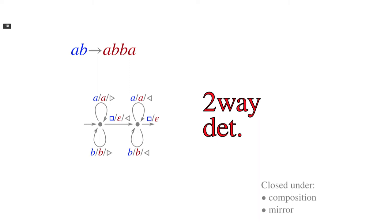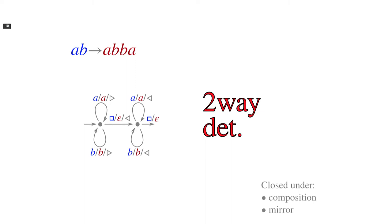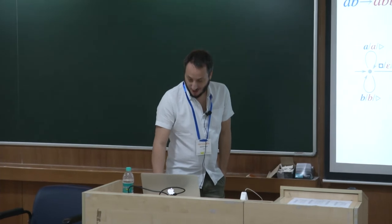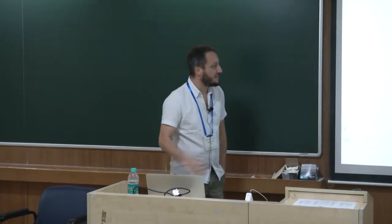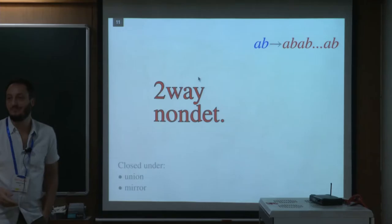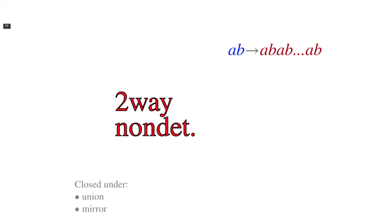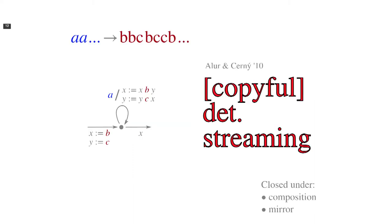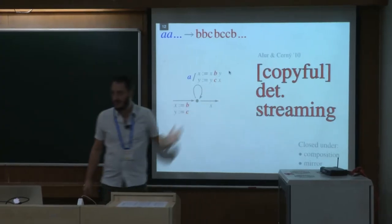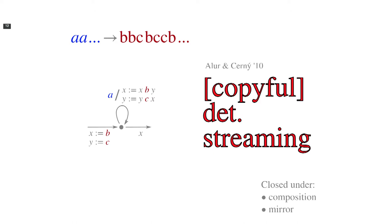Two-way deterministic transducers are closed under composition — a very nice property that is not easy to prove. Then there is the non-deterministic version, where you can copy your input an arbitrary number of times, which you cannot do with the previous model. Now for the more recent model: streaming string transducers, which come in deterministic and non-deterministic variants, and also copyful or copyless variants. Copyful is the most permissive.